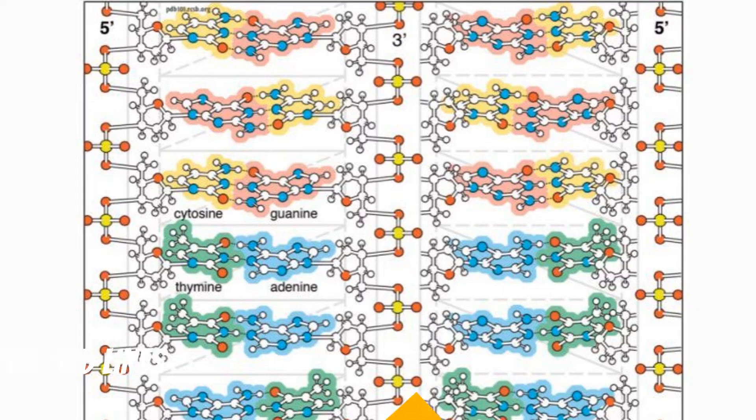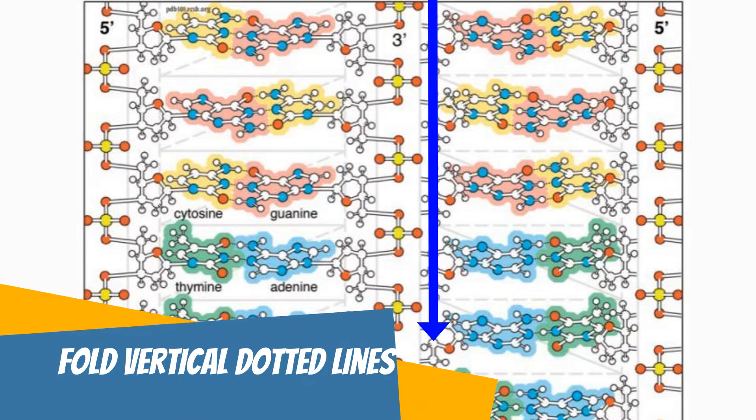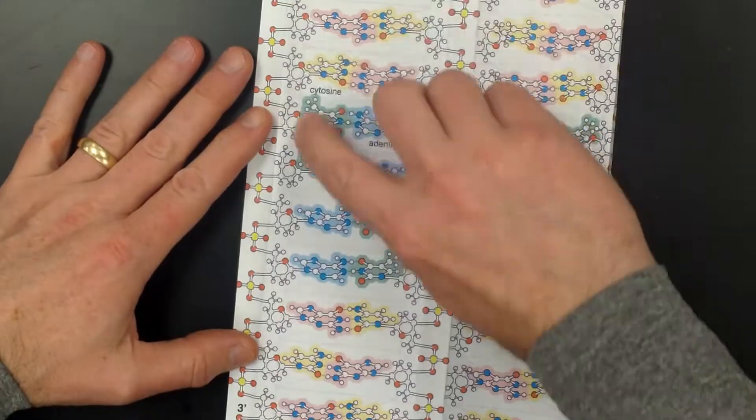Now fold the long vertical dotted lines. These should be folded so that the dotted lines are hidden inside of the fold.